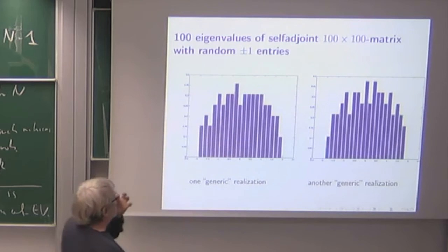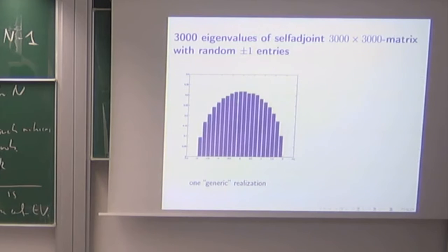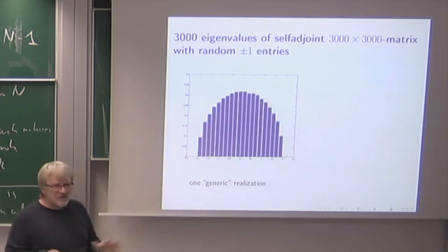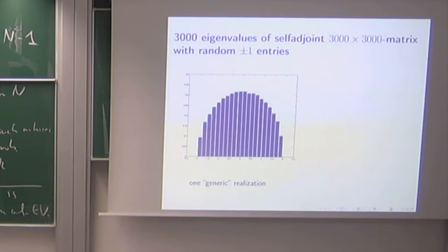So it seems that at least for large n, the typical eigenvalue distribution seems to be given by similar shapes. And if you are making n bigger and bigger these shapes are getting closer and closer. So here I have a 3000 by 3000 matrix, randomly generated distribution of this with plus minus one entries. So I have 3000 eigenvalues. This is the histogram of the eigenvalues.